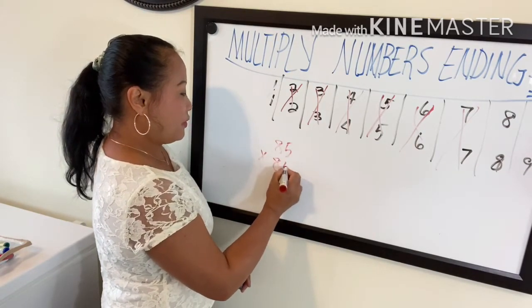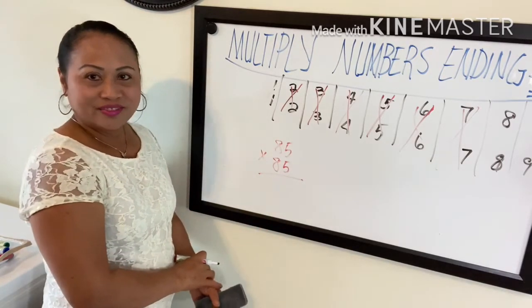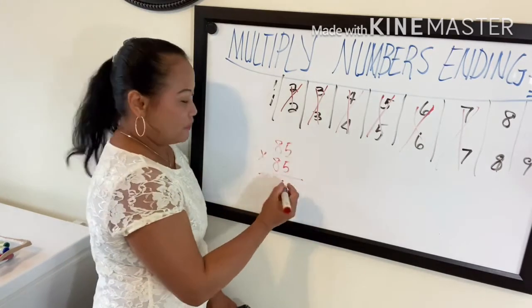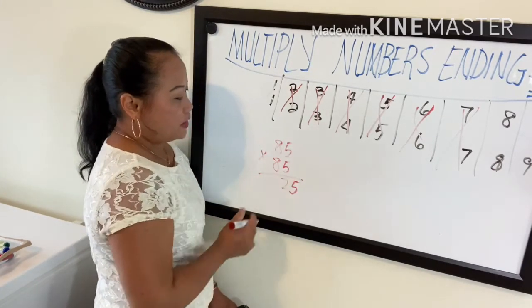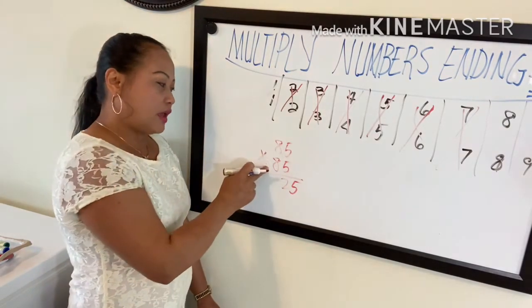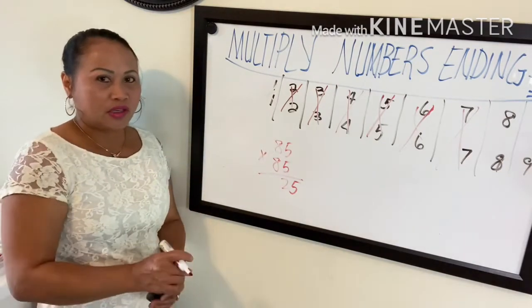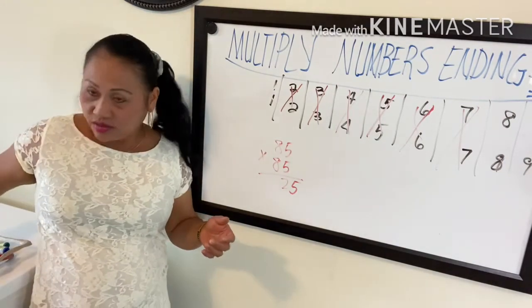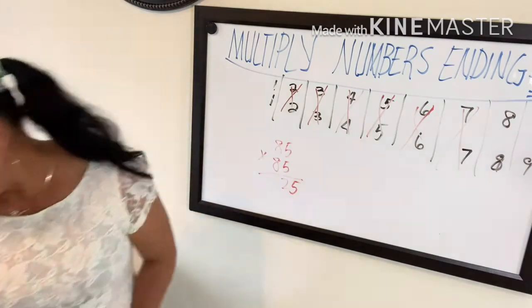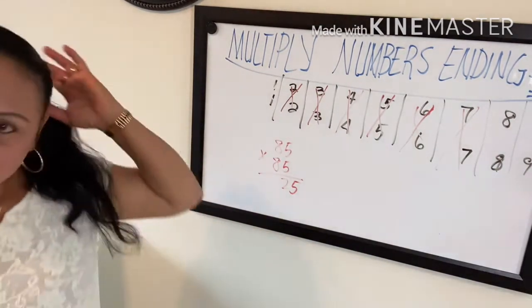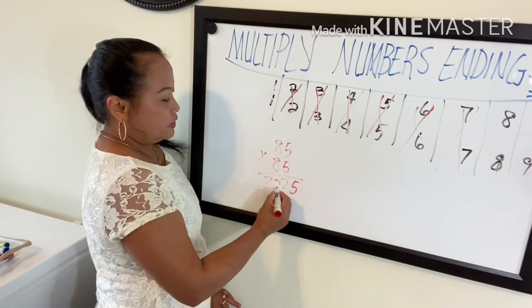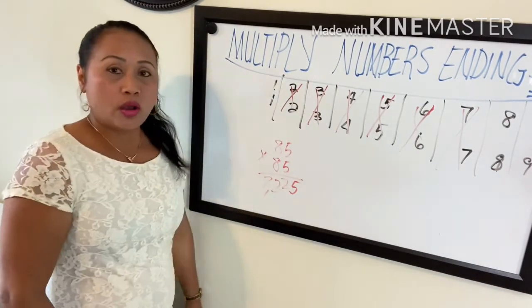Now 85 times 85. Five times five is 25, add one to eight — eight becomes nine — and nine times eight is 72. The answer is 7225.